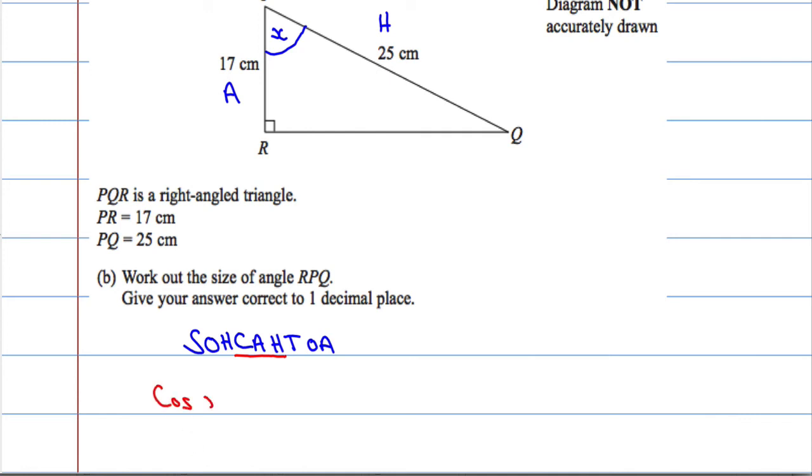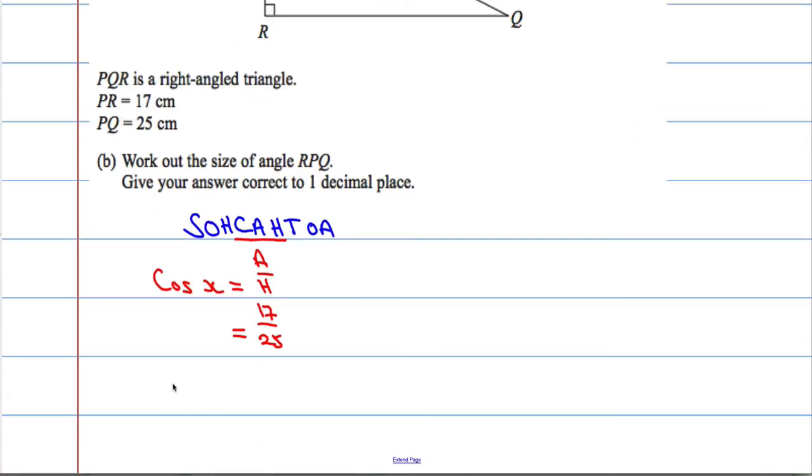Cosine of the angle X will equal the adjacent over the hypotenuse. The adjacent is 17, the hypotenuse is 25. So cosine of X is 17 over 25. That means X will equal the inverse cosine of 17 over 25.